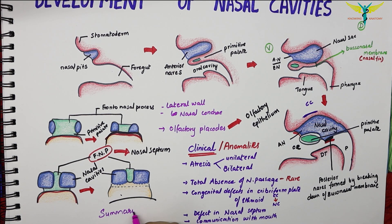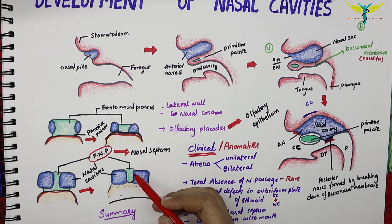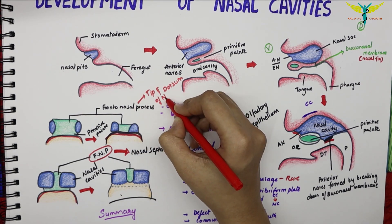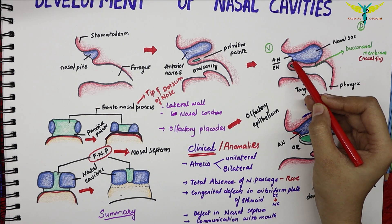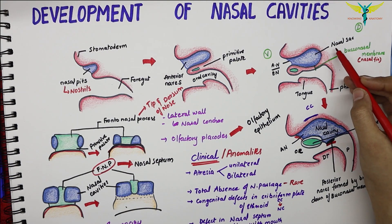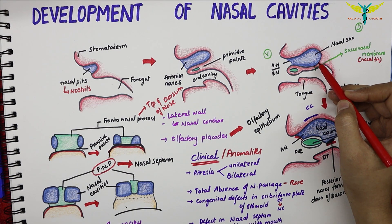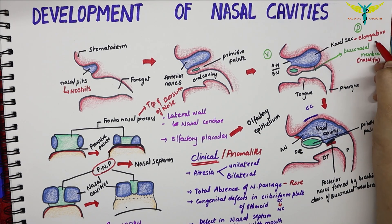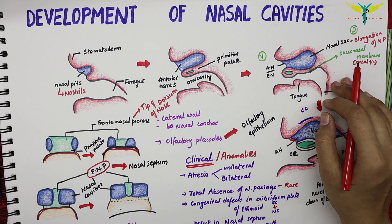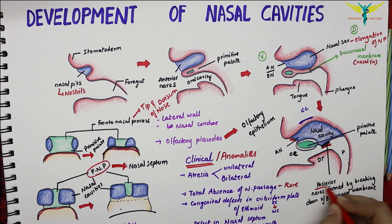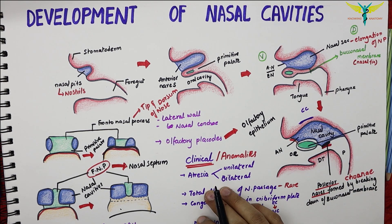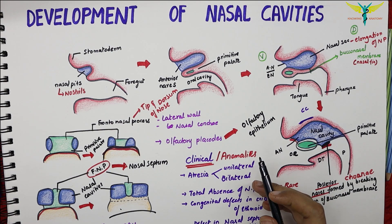In summary: the frontonasal processes form the dorsum and tip of the nose; the nasal pits form the origin of the nostrils; the nasal sacs are the elongations of the nasal pit forming the nasal cavity; and the rupture of the bucconasal membrane forms the posterior nares, also called the choanae. That covers the development of the nasal cavities.